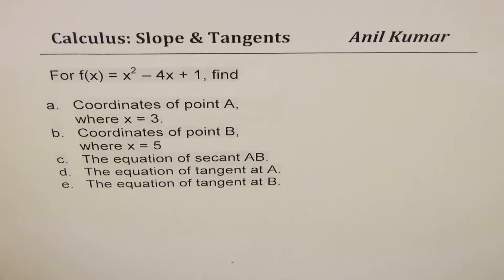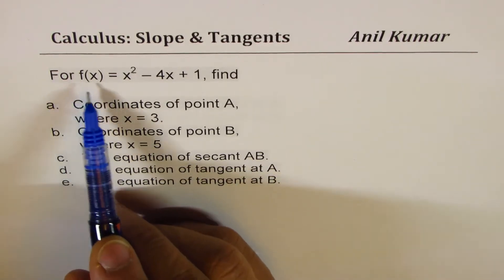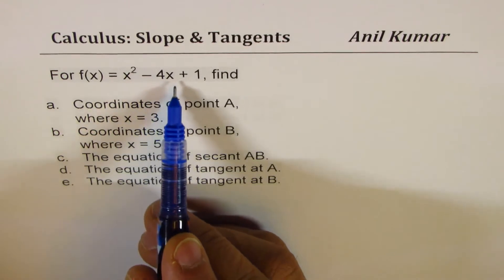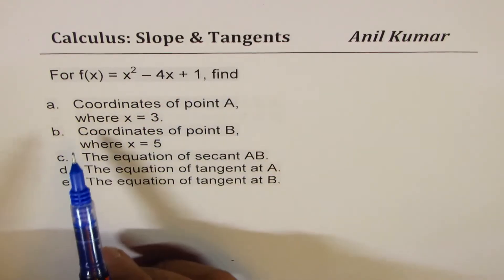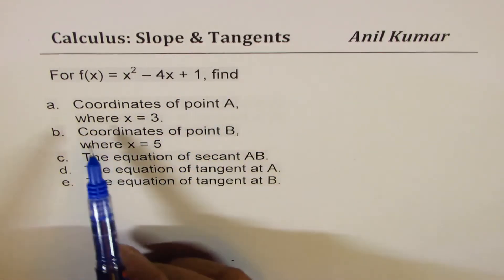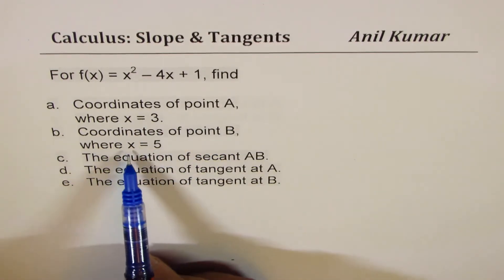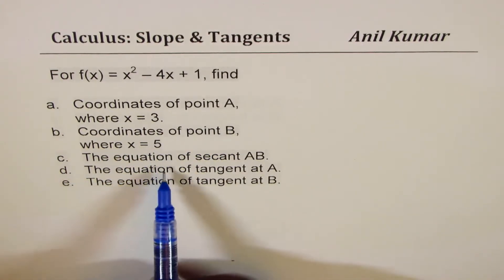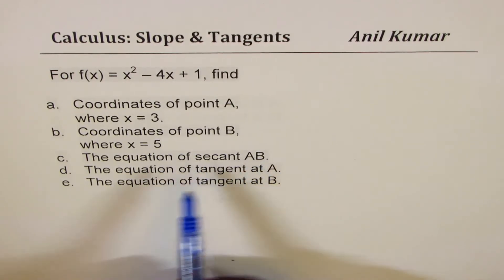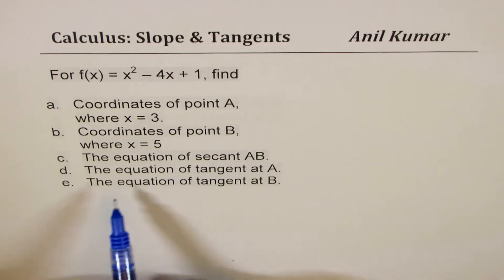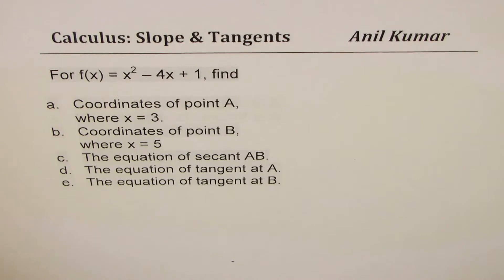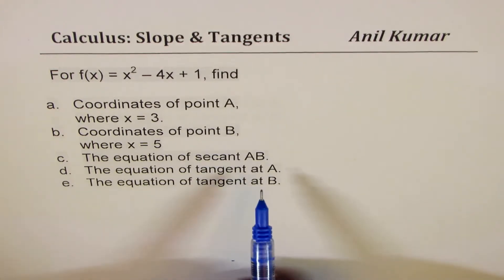I'm Anil Kumar. Here is a practice test question on slopes and tangents. The question is: for f(x) = x² - 4x + 1, find the coordinates of point A where x = 3, coordinates of point B where x = 5, the equation of secant AB, the equation of tangent at A, and the equation of tangent at B.